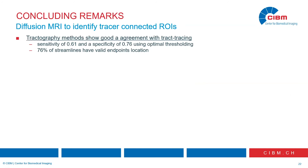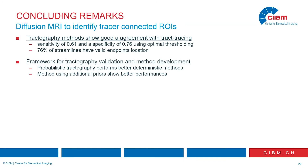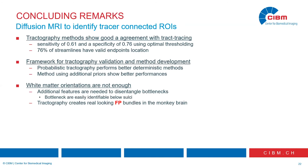In concluding remarks: tractography shows good agreement with the tracer data, with an average sensitivity across all methods of 0.61 and a specificity of 0.76 using optimal thresholding. Overall, 76% of streamlines in this network had endpoints in locations that agree with the tracer data. This framework for comparing probabilistic and deterministic approaches can be used to improve method development. Probabilistic approaches outperform deterministic methods overall, and using additional priors shows better performance, though not strikingly so. These results suggest that white matter orientation alone is not enough to accurately reconstruct all true positives without also producing false positive bundles.